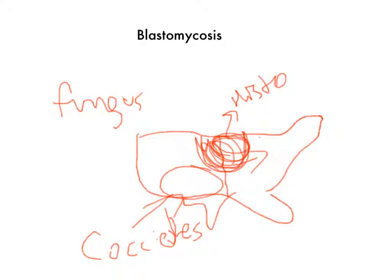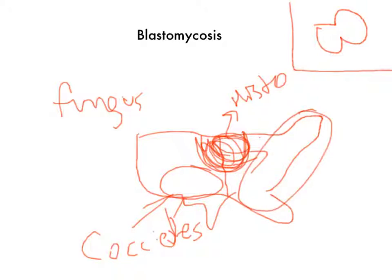You give isoniazid for TB prophylaxis. The key thing to look for with blastomycosis is broad-based budding — that's the biggest thing. They may give you a picture of these fungi separating and ask what it is and where you see it. The answer is east of the Mississippi with broad-based budding yeast.